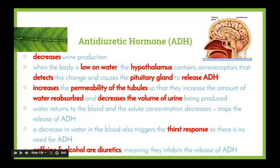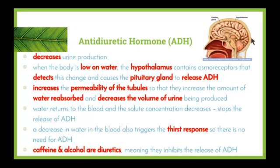The pituitary gland is a tiny pea-sized gland in the brain. Once the hypothalamus detects a change in water level, it stimulates the pituitary gland to release ADH. The ADH then increases the permeability of the tubules in the nephron so that they increase the amount of water reabsorbed and decrease the volume of urine produced. This helps restore water levels in the blood. Water returns to the blood, solute concentration decreases, and the hypothalamus detects this and stops the pituitary gland from releasing ADH.